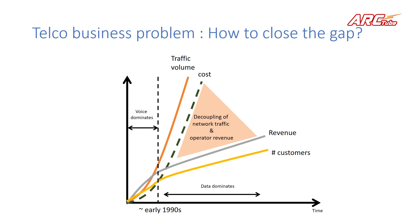Before getting into telco softwarization, let's look at something we discussed in our previous video on telco digital transformation — the telco business problem, which is shown in this graph. Now it is not correct to plot cost and traffic in the same graph, but for illustrative purposes we have done that. You can clearly see the cost is increasing due to the growing traffic, both stored and transported, and the revenues are not increasing the way telcos would want, and therefore there is a gap.